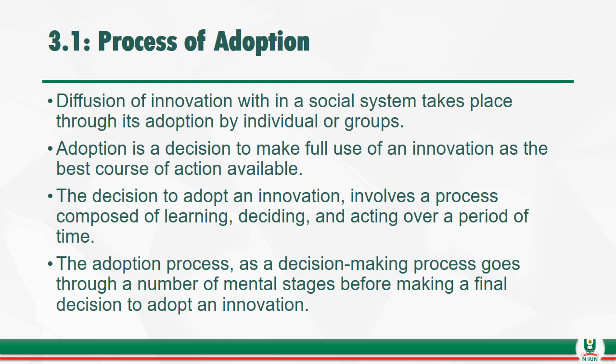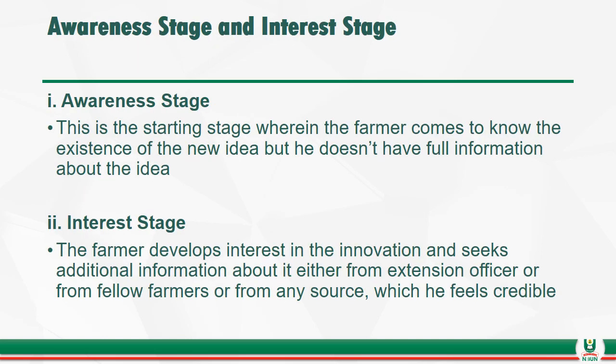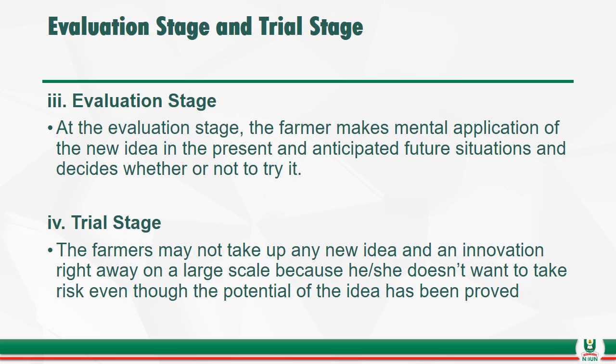Talking about Section 3.1, the process of adoption: the diffusion of innovation within a social system takes place through its adoption by individuals or groups of people. Adoption is a decision to make full use of an innovation as the best course of action available. The adoption process, as a decision-making process, goes through a number of mental stages before a final decision is made. The stages of adoption are usually five: the awareness stage, the interest stage, the evaluation stage, the trial stage, and the adoption stage.